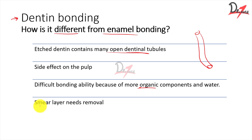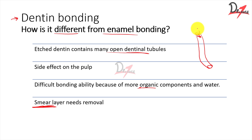In dentine, we have something called the smear layer. When we cut the dentine, we get a layer of loosely adhered debris that covers the dentinal tubules. That is the smear layer, and we need to remove it because the composite must come in and form resin tags by engaging inside the dentinal tubules. For them to engage, we need these tubules to be open.